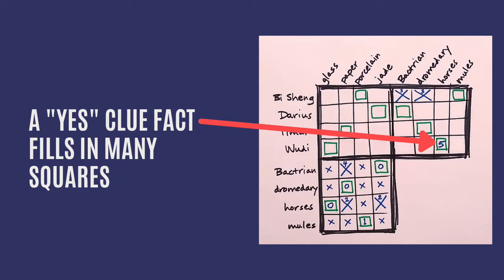How about this upper section? We have only one yes clue. We can put in one or two more. How about a yes for Wudi and horses? And then we fill these in.